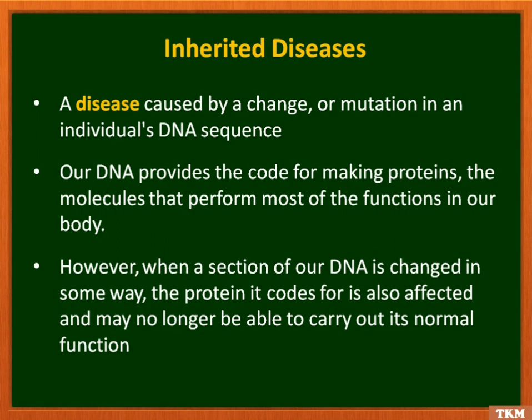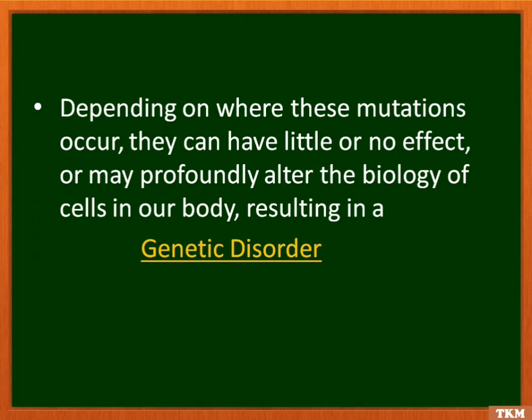A disease caused by a change or mutation in an individual's DNA sequence is called an inherited disease. Our DNA provides a code for making proteins — the molecules that perform most of the functions in our body. However, when a section of our DNA is changed in some way, the protein it codes for also gets affected and may not be able to carry out its normal function. Depending on where these mutations occur, they can have little or no effect, or they can have a very profound effect by altering the biology of the cells in our body, resulting in a genetic disorder.